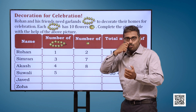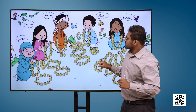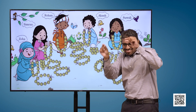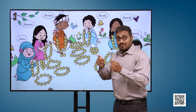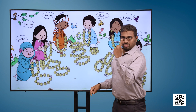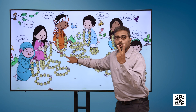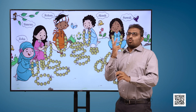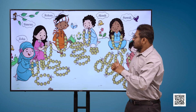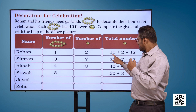Rohan: number of garlands 1, number of flowers 2, number of garlands 2, number of flowers 2. Total number of flowers: 10 plus 2 is equal to 12.